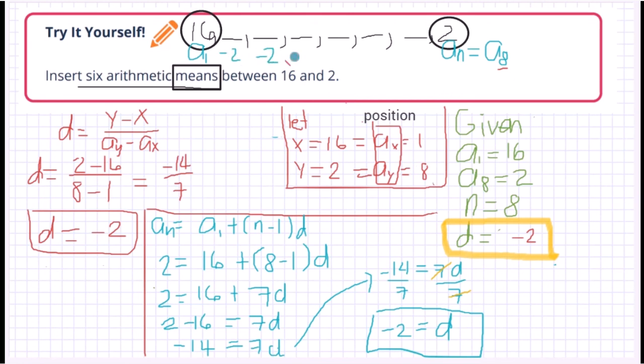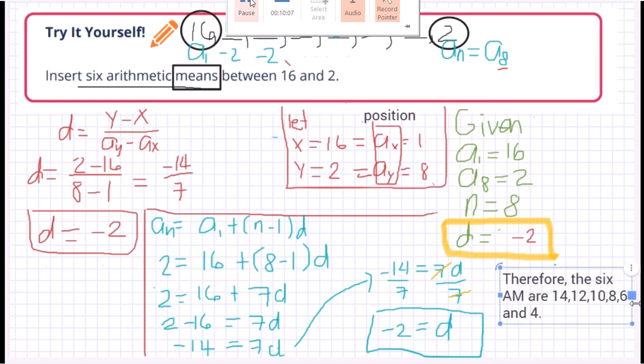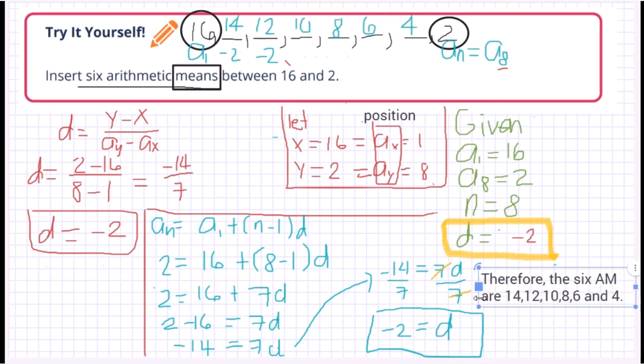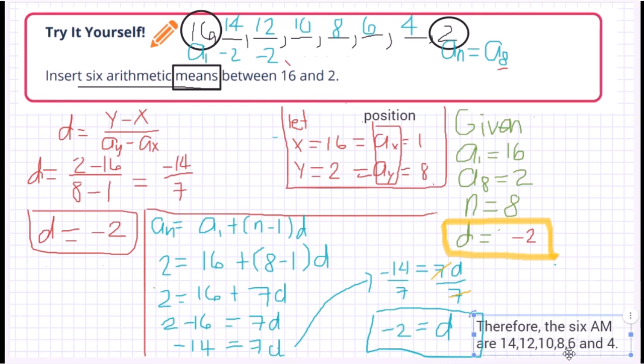So therefore we can subtract it by 2 or add negative 2, and then add negative 2 so that we can get the next term and so on and so forth. So therefore the next 16 is 14, and then minus 2 we have 12, minus 2 we have 10. Minus 2 we have 8. Minus 2 we have 6. Minus 2 is 4. And yes exactly, so we have 2 as the last. So therefore let's have our conclusion. So therefore the 6 arithmetic means are the following number: we have 14, 12, 10, 8, 6, and 4.